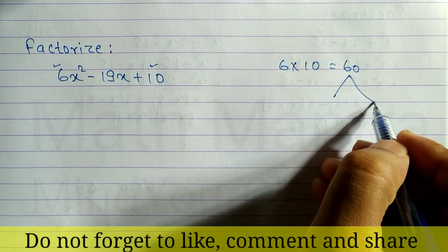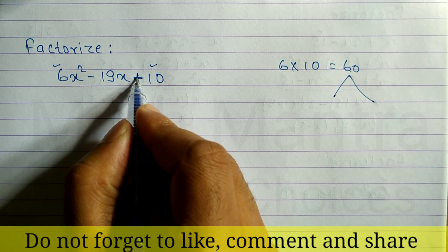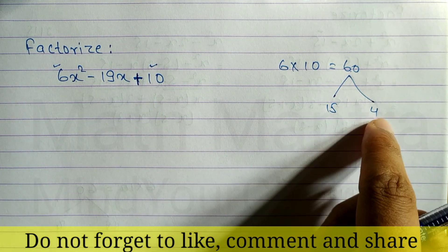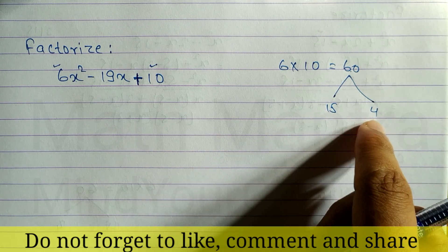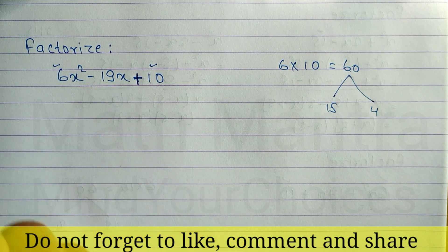Now, we have to find two factors or two numbers whose multiplication is 60 and addition is 19. The factors are 15 and 4. When you multiply these two numbers 15 and 4, we get 60. When you add these two numbers, we get 19.